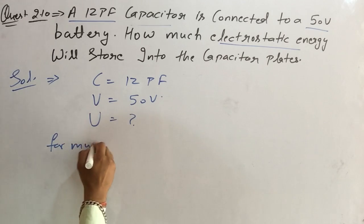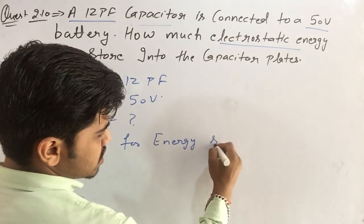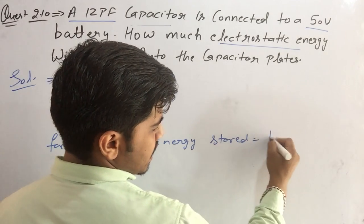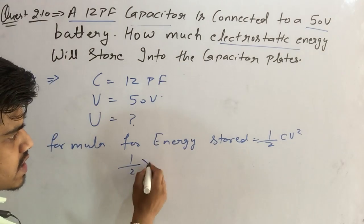The formula for energy stored within a capacitor is, as we know, half CV squared. Now students, what is C?